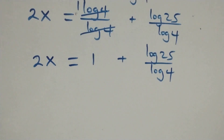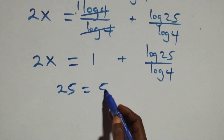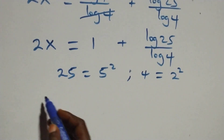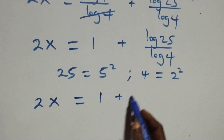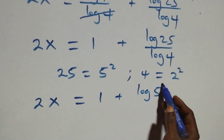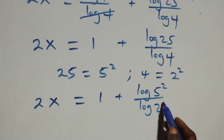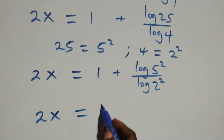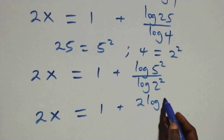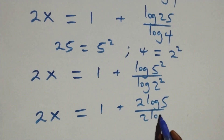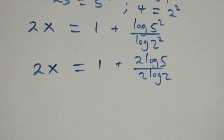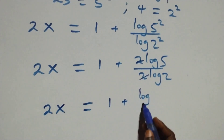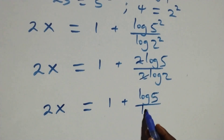Here we can rewrite 25 as 5 times 5, that's 5 squared. Also 4 as 2 times 2, that's 2 squared. Then what we have becomes 2x equals 1 plus log 5 squared over log 2 squared. When we apply the power rule of logarithms, the 2 comes out in both numerator and denominator: 2x equals 1 plus 2 log 5 over 2 log 2. The 2s cancel, so 2x equals 1 plus log 5 over log 2.